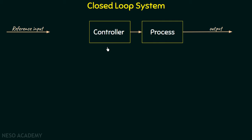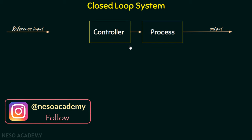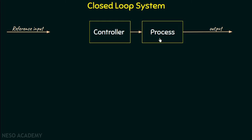This is the block diagram of an open loop system that we have already discussed in the previous lecture. We know that open loop systems are internally divided into two different sections: the controller section, which controls the amount of input required for the desired output, and the process section, which processes the input in order to generate the output. The major disadvantage of open loop systems is that they do not know when to stop, or they are not able to handle disturbance.